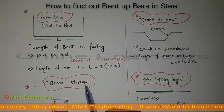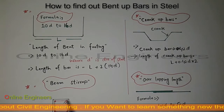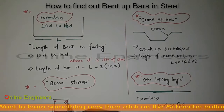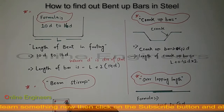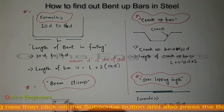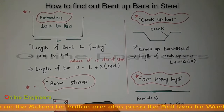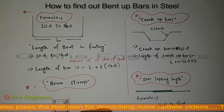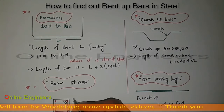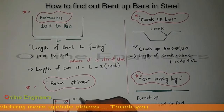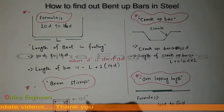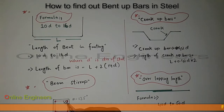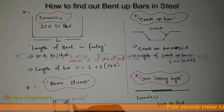The second one we have is beam stirrups. This is the beam and this is the stirrup. These are hooks, and you can bend them at some angle. I want to take 135 degrees here. Now, how to find out the length of these hooks?